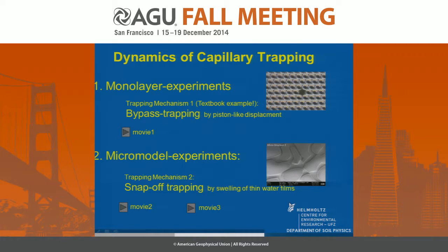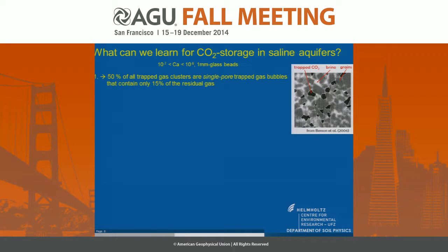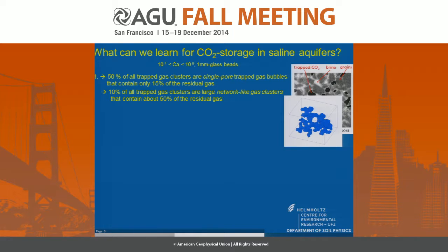Snap-off events produce one type of trapping, and in the other case we have bypassing trapping. For CO2 storage, usually in the literature you find the picture of single pore trapped bubbles. We find that 50% of our gas clusters are single pore trapped gas bubbles, but they contain only 15% of the residual gas. The larger ganglia — only 10% in number — contain 50% of the residual gas and determine the time behavior of mass transfer.